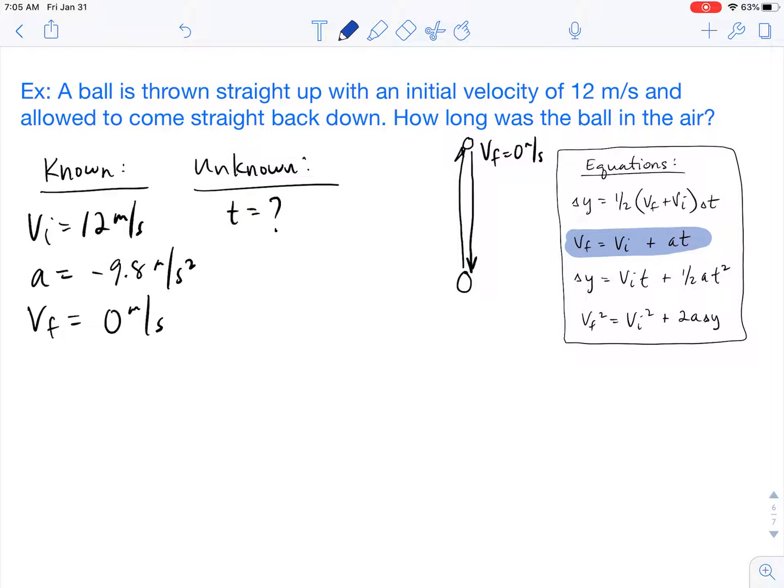So VF equals VI plus AT. Well, in our knowns and unknowns, our VF is zero. VI was 12 plus A times T.